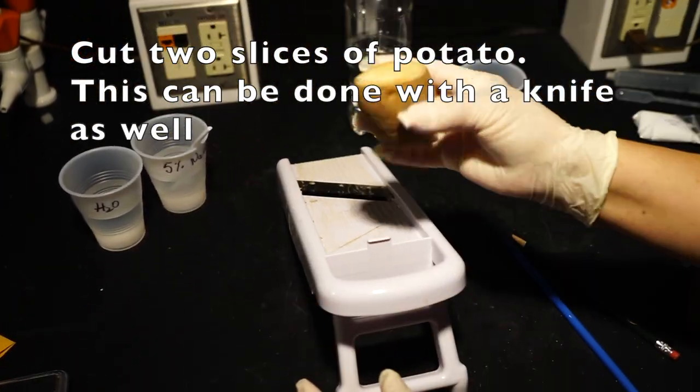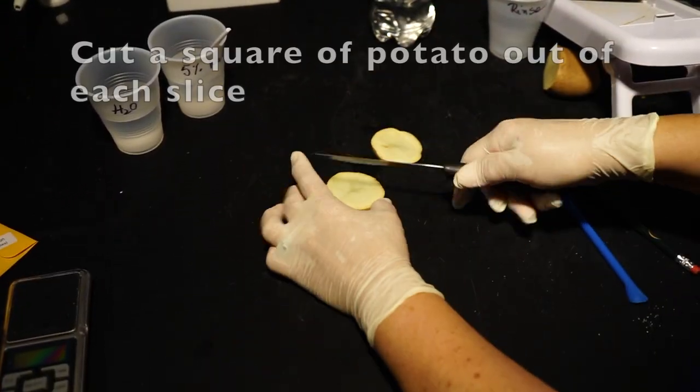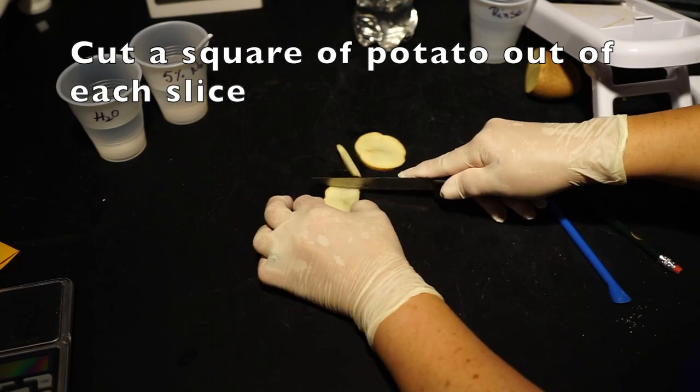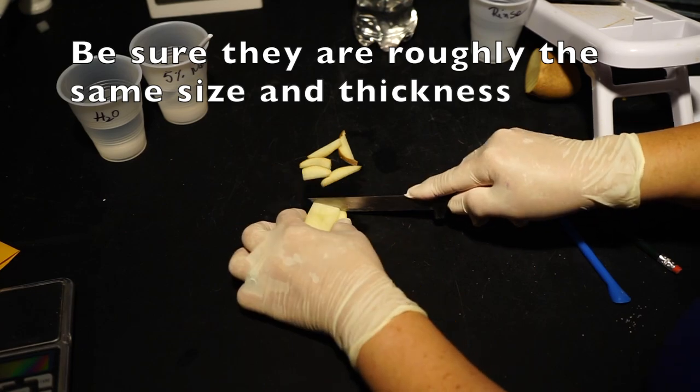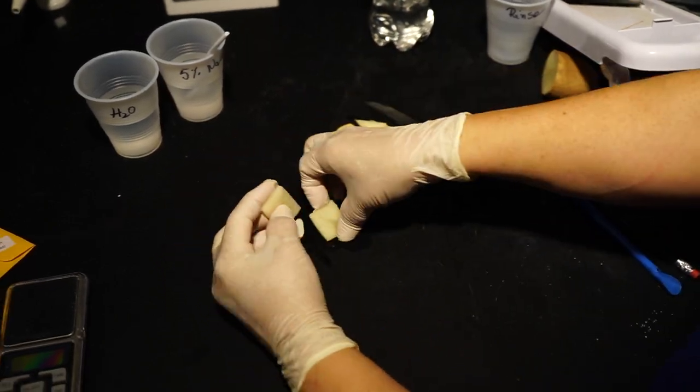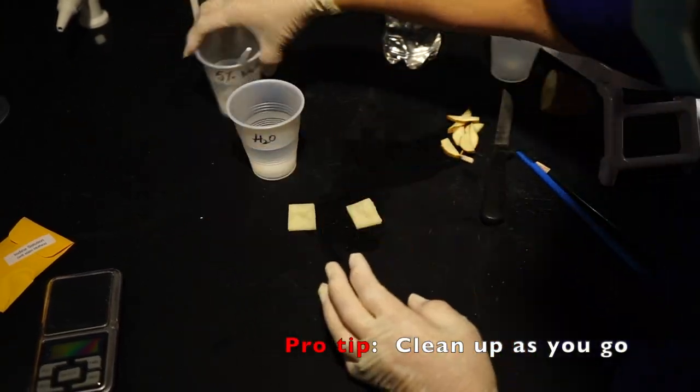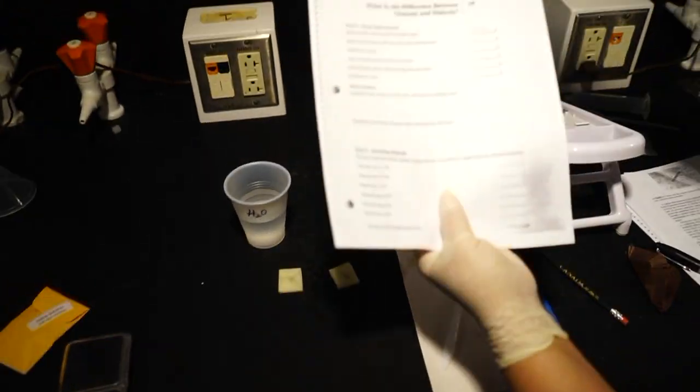Next, cut two slices of potato. You'll need to ensure that there is no skin on the pieces of potato and that both pieces are roughly the same size and thickness. The easiest way is to cut a square out of a round slice of the potato. Once you have both pieces and they are roughly the same size, you will need to weigh out each piece before placing them into the solutions.